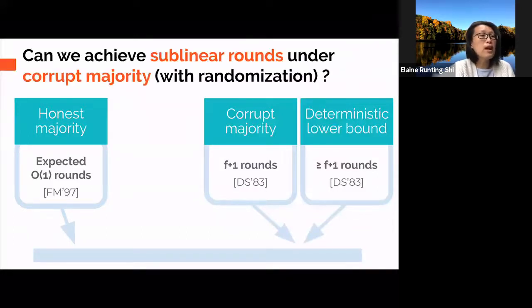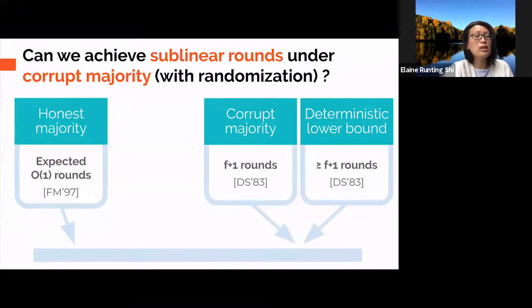Given the state of affairs, a very natural question is whether we can achieve sublinear round Byzantine broadcast in a corrupt majority setting, too. Obviously, due to the F plus one deterministic lower bound, to hope for such a result, we must rely on randomness.